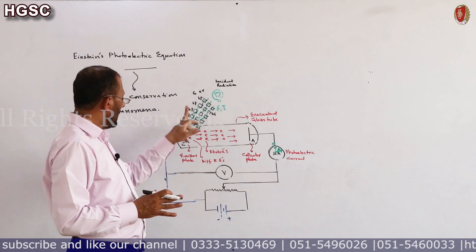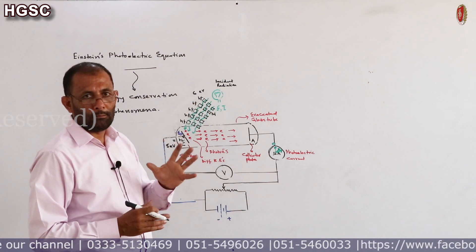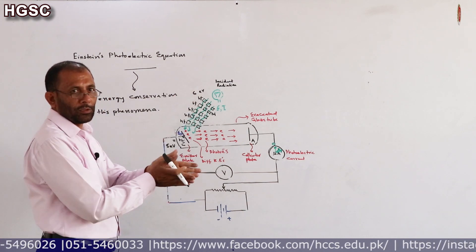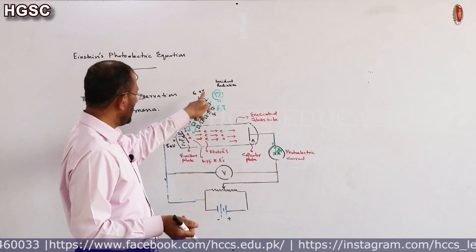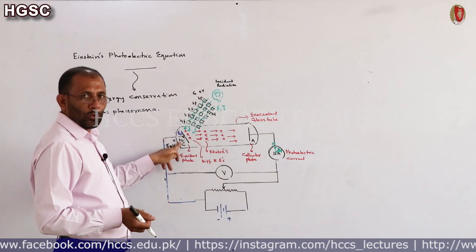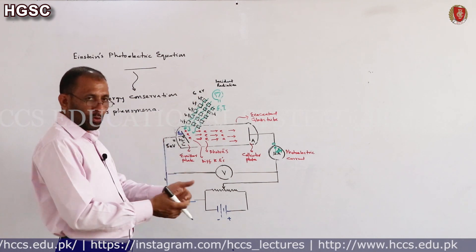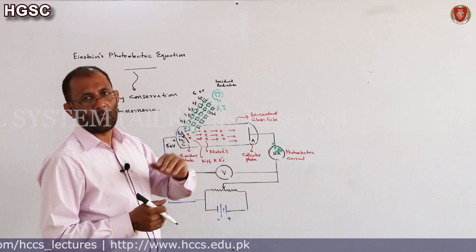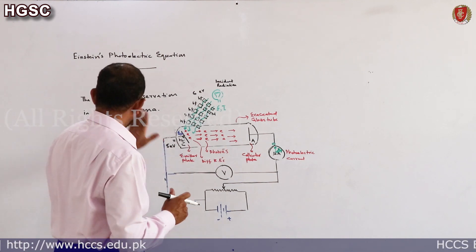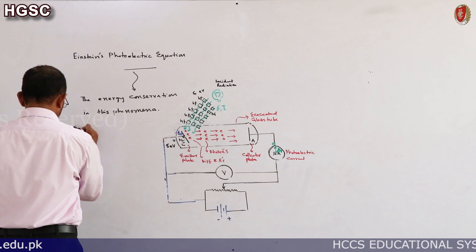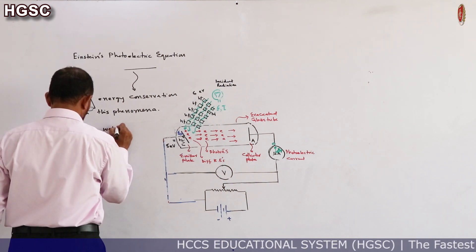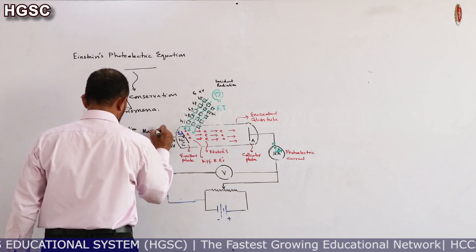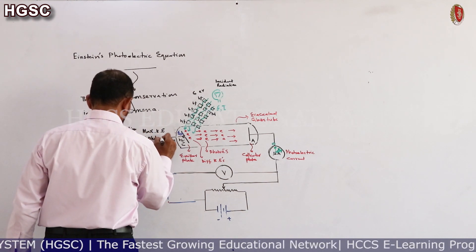So how is the energy of photon divided into different parts? Part of energy of photon is used by the electron to come out of the metal, and remaining part of energy would be the maximum kinetic energy of photoelectrons. So mathematically we can write: energy of photon equals work function of metal plus maximum kinetic energy of photoelectrons.